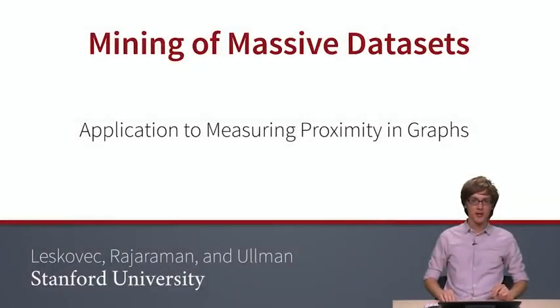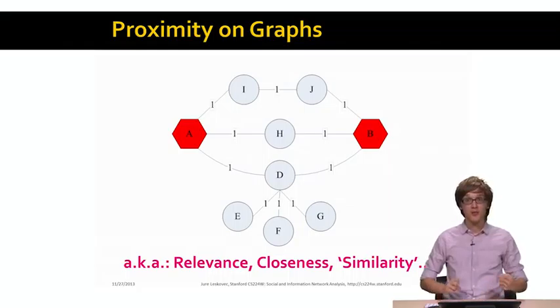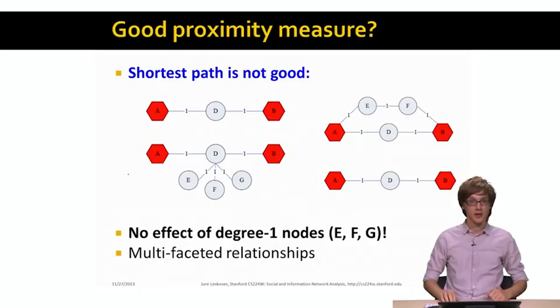The next example of PageRank that we will look at is the application to measuring proximity in graphs. Here is basically the idea. Imagine we are given a graph and we would like to measure some notion of proximity or closeness or similarity between nodes A and B, the red hexagonal nodes. The question is, how do we do this?